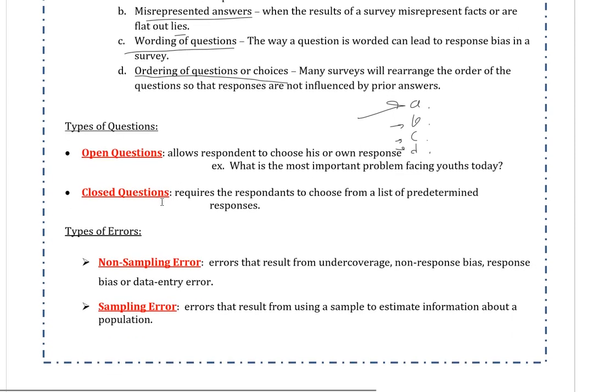A few other concepts, we have types of questions. You can either have open or closed questions. If you have an open question, the respondent can choose their response, they usually have an open space to put in their answer. Or closed questions, which means they choose from a list, like an A, B, C, D option.